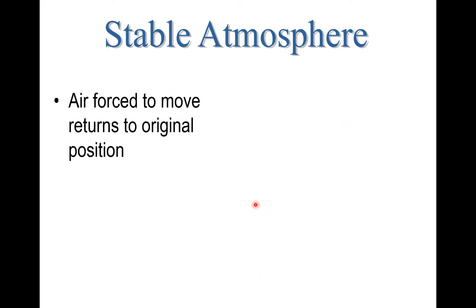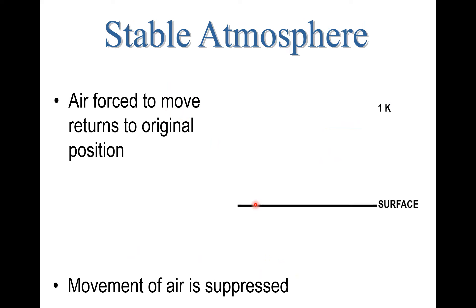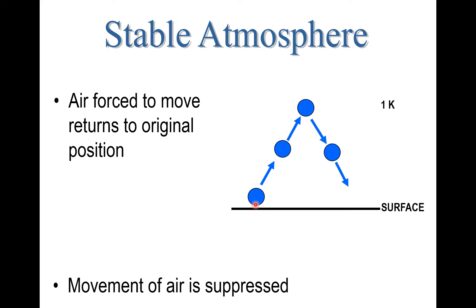With a stable atmosphere, air is forced to move back to its original position. In this example with the blue ball representing an air parcel, something like a cold front causes the air parcel to want to rise. It gets up to the 1,000 foot level, but then it sinks right back down to the surface. This is an example where the movement of air is suppressed — atmospheric stability, where air is forced to move back to its original starting point.